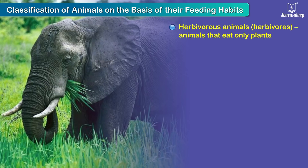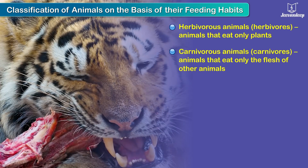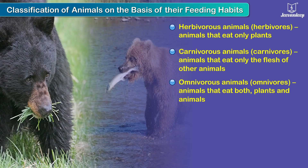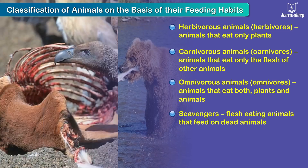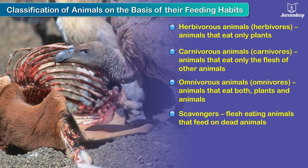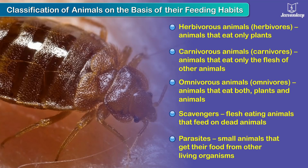Herbivorous animals or herbivores are the animals that eat only plants. Carnivorous animals or carnivores are the animals that eat only the flesh of other animals. Omnivores are the animals that eat both plants and animals. Scavengers are the flesh-eating animals that feed on dead animals. Parasites are some small animals that get their food from other living organisms.